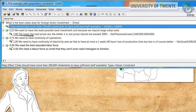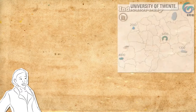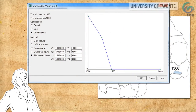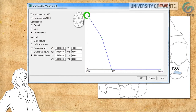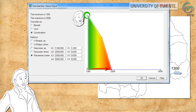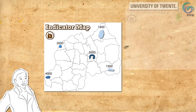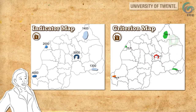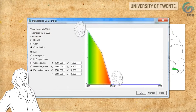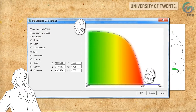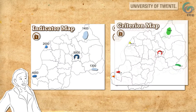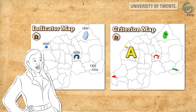The investor also wants minimal costs, so cities with lower land prices are better. This is the indicator map with land prices. Cheap land at 1,300 is good and gets a utility value of 1, while land costing more than 2,500 has a utility value of 0. ILWIS converts the indicator map to a criterion map of land price suitability. City D is the best, and cities B and E are clearly less suitable. If you have more money available, you simply change the curve and ILWIS redraws the criterion map — now city A becomes affordable as well.